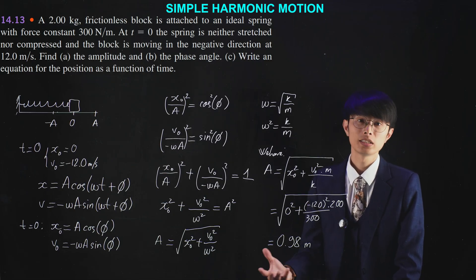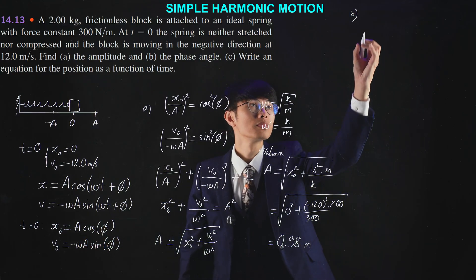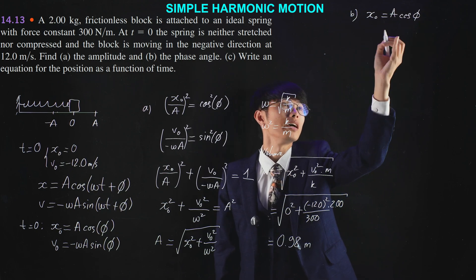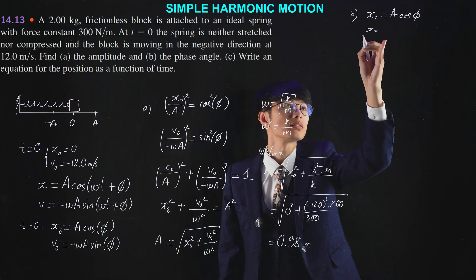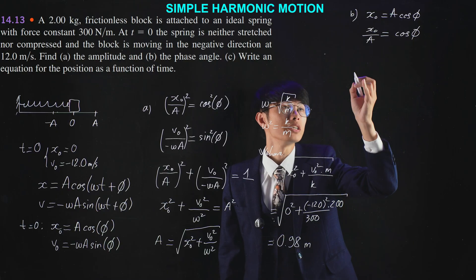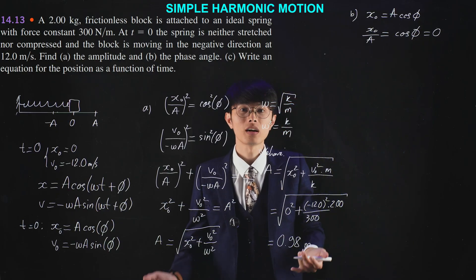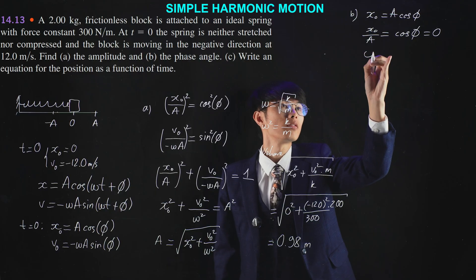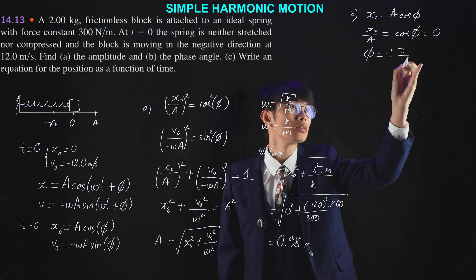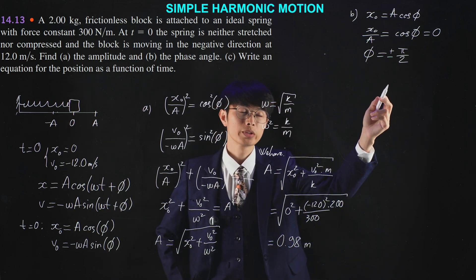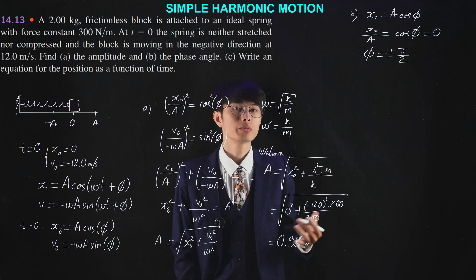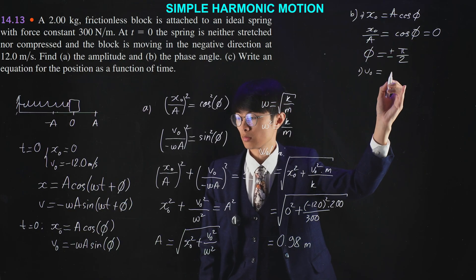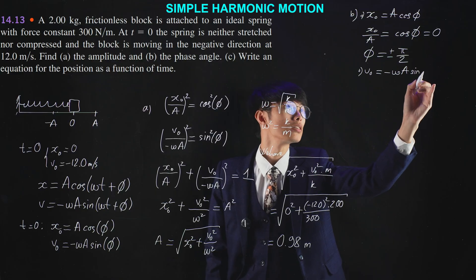The next thing is to find the phase angle. Starting with the position function: x₀ equals A cos(phi). Dividing through by A, we get x₀ divided by A equals cosine of phi. Since x₀ is zero, cosine of phi equals zero, which means phi equals plus or minus pi over two. We don't know which sign to take, so we use the second equation to determine it.